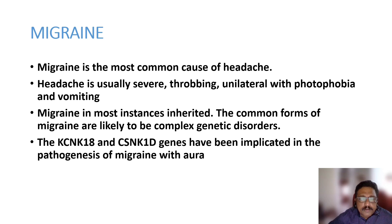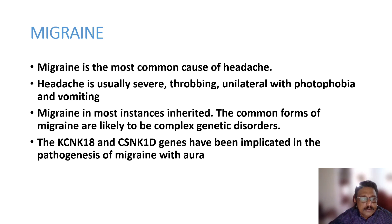Migraine is the most common type of vascular headache. It is typically a severe, throbbing, mainly unilateral headache associated with photophobia. It is mostly inherited; the KCNK18 and CSNK1D genes have been implicated in the pathogenesis of migraine with aura.